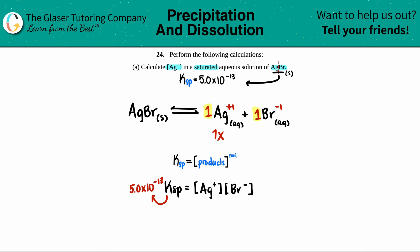but 1 times X is the same as X. And then the same for here, this would just be X. And these are your values that you're going to plug in into your equation. So Ag+ is X and Br- is X.